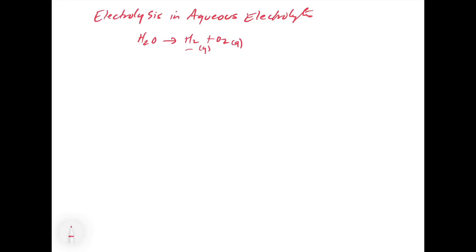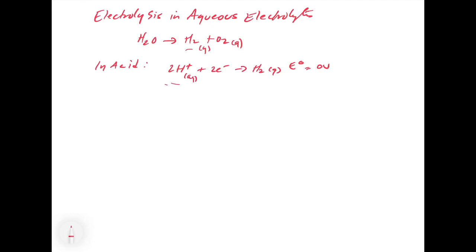Because aqueous electrolytes can be oxidized and reduced, we have what we call a potential window. In an acidic electrolyte, we have protons hanging around, so if we give the protons electrons, this is going to make hydrogen gas, and this occurs at zero volts. This effectively sets the lower limit for our potential window.